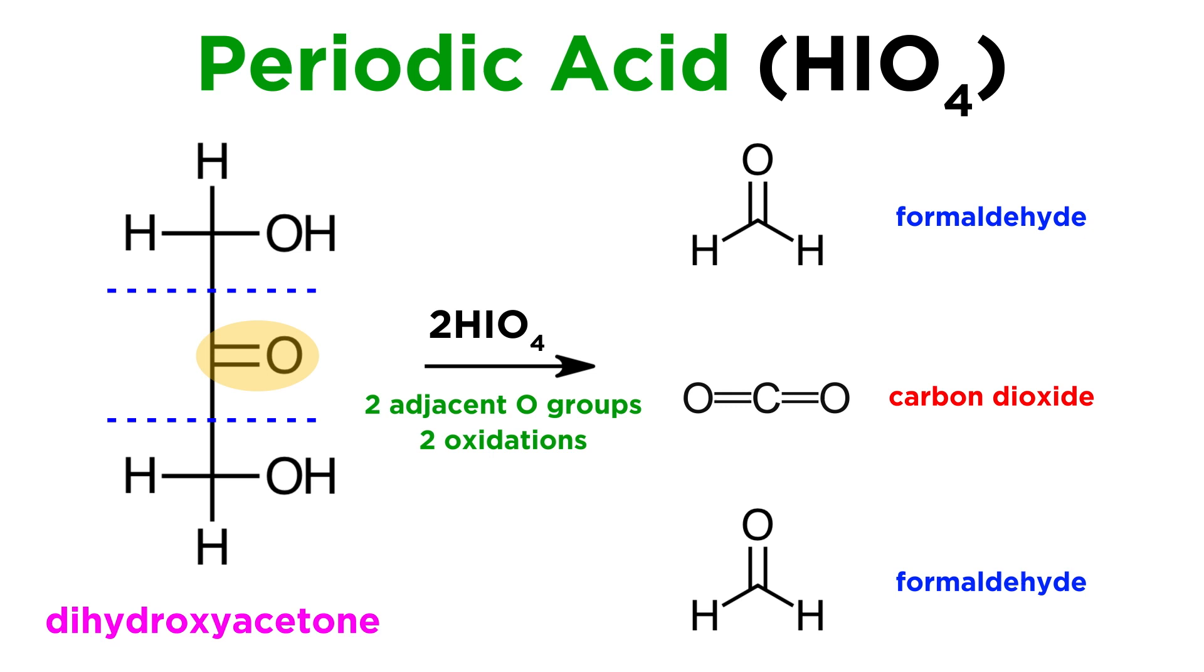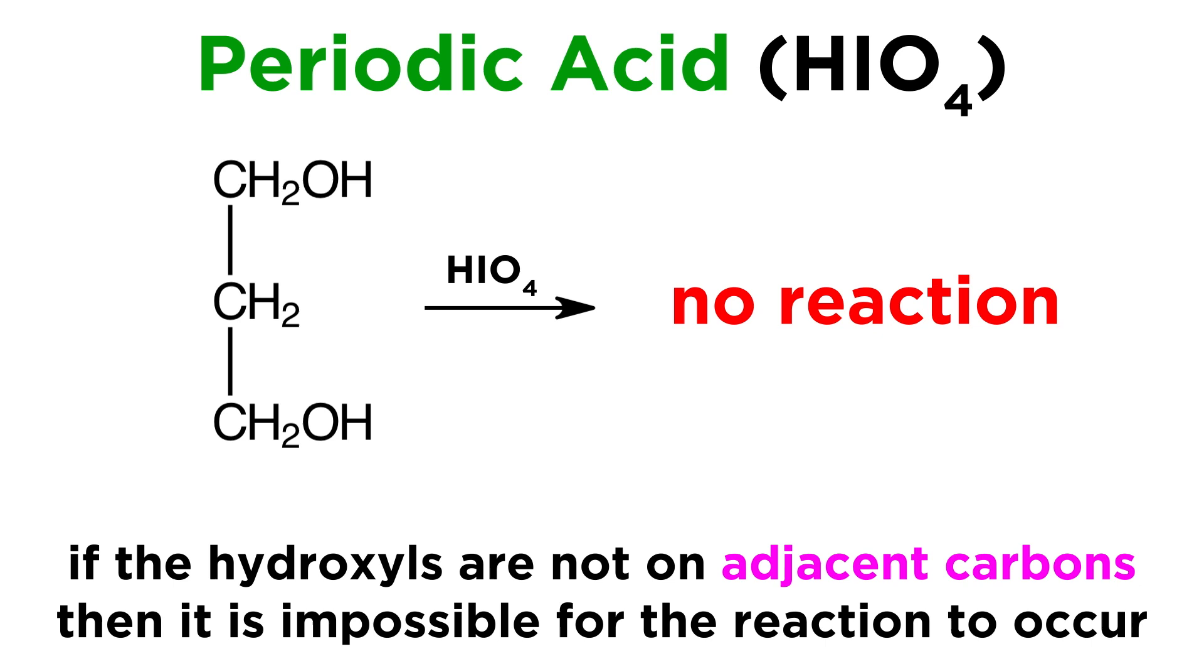So this method of counting the number of oxygen-containing functional groups on either side, and applying that number of oxidations to a functional group is reliable in determining what will be produced once the carbon-carbon bonds are cleaved. By the same token, we must understand that if there are intervening carbons that have no oxygen-containing functionality, no cleavage can occur. So if we return to glycerol but remove the central hydroxyl, there is no reaction. There must be hydroxyl or carbonyl groups on adjacent carbons for this to work.